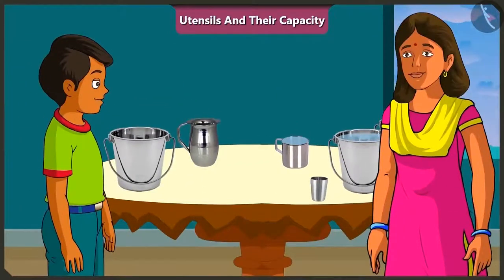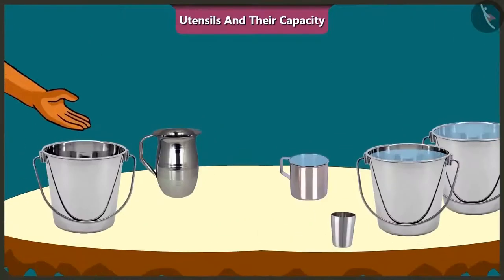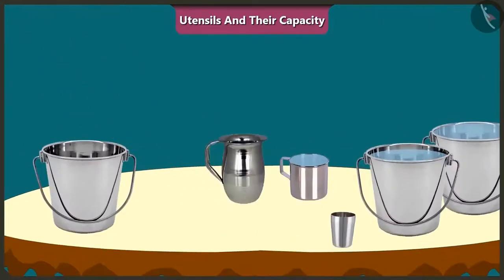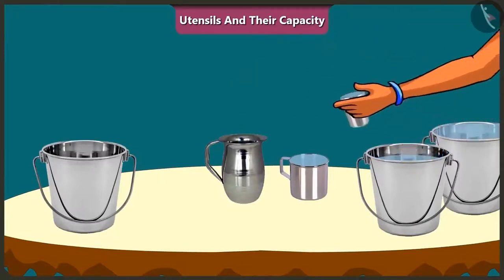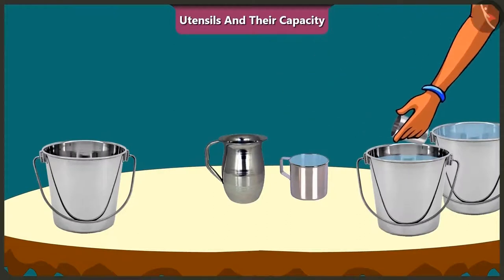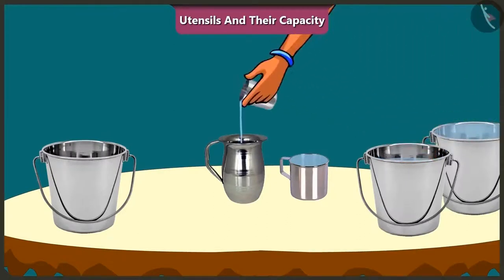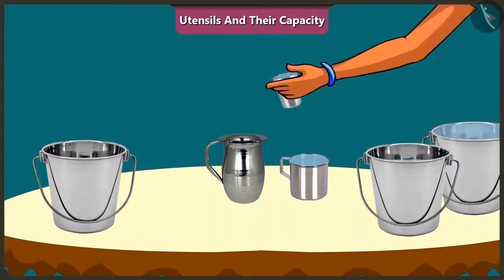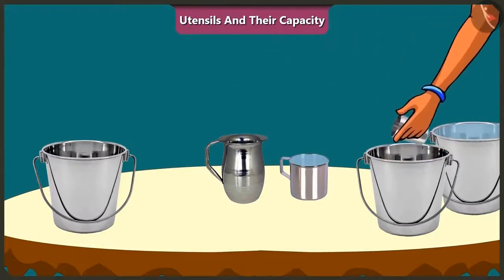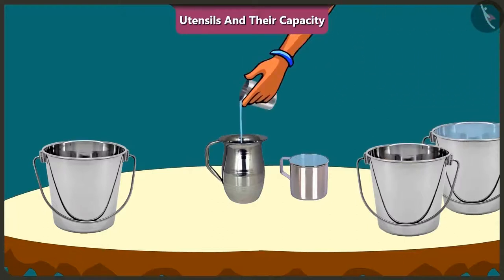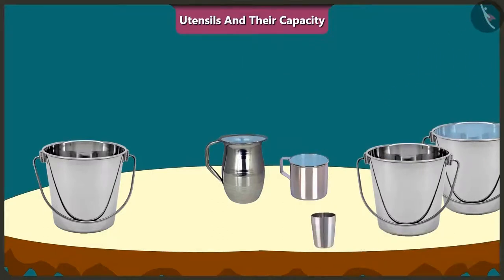Now, with the help of the same glass, we will fill this jug with water. One, two, three, four, five and six. The jug is completely filled. So the capacity of this jug is equal to six glasses of water.